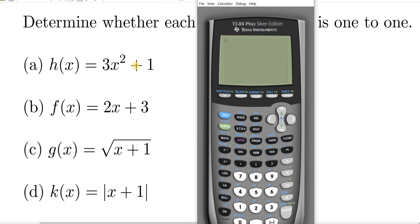Basically all you have to do is graph these and if it passes the horizontal line test then it's one to one. If it doesn't then it's not one to one.